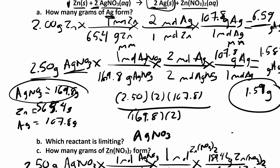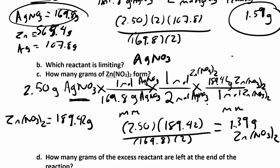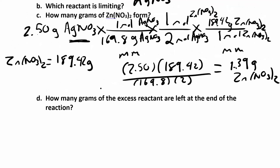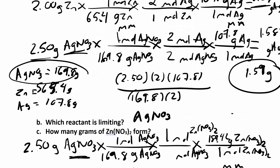You don't have to do it for both reactants because we've already identified our limiting reactant. If it limits how much silver we're going to make, it also limits how much zinc nitrate we're going to make. In Part D, they want to know how many grams of the excess reactant are left at the end of the reaction. Our excess reactant — zinc and silver nitrate are our reactants. Silver nitrate is the limiting reactant, so zinc is the one we have in excess. We're starting with 2 grams of zinc, and we need to figure out how many grams of zinc actually react, then subtract that from how much we started with.